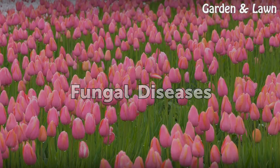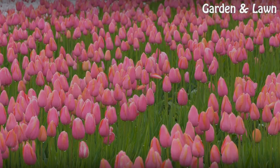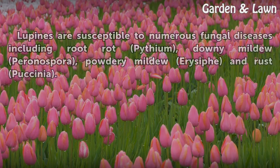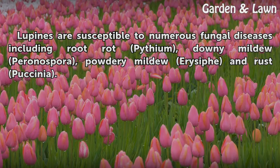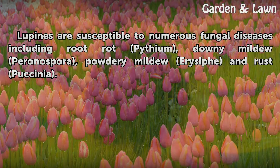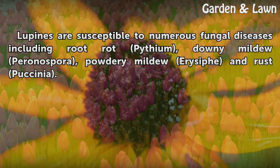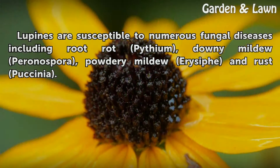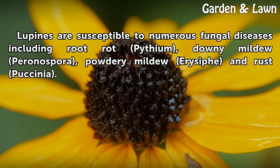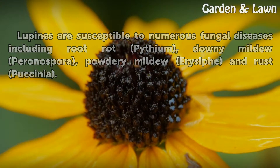Fungal Diseases. Lupines are susceptible to numerous fungal diseases including root rot (Pythium), downy mildew (Peronospora), powdery mildew (Erysiphe), and rust (Puccinia).